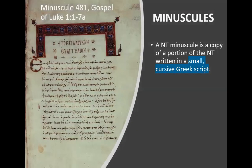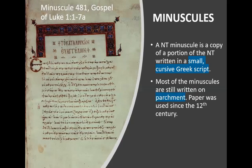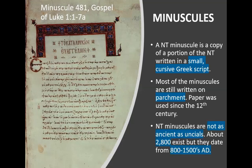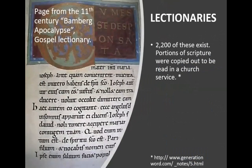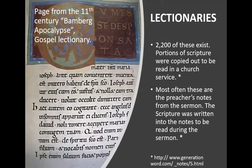Then you get the minuscules, which are very pretty if you look at them — a small cursive Greek text. They are later than the uncials, also written on parchment, and after the 12th century they started using paper. We have about 2,800 of those, dating from about 800 to the 1500s. Lectionaries — we have 2,200 of these. These are portions of scripture copied out to read in a church service, and often you have the preacher's notes in there as well.